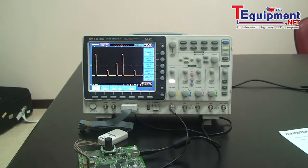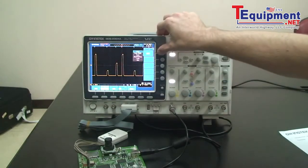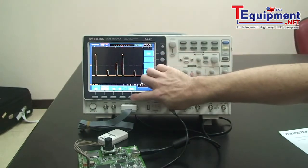We will set the type to search and then set the threshold level so the scope knows what events to search for. We're going to set to edge and then set the threshold level.